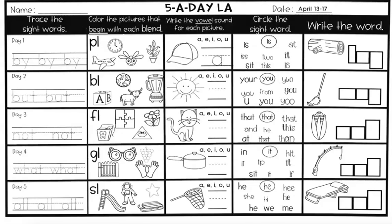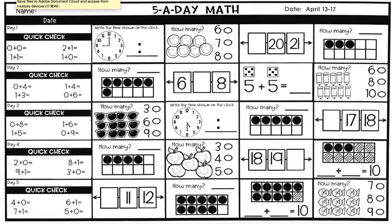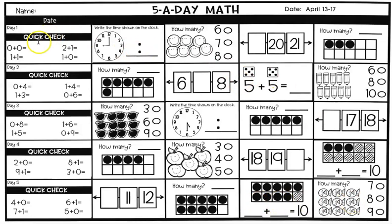That's all for week one on the reading language arts. We're going to move on to the math sheet. For the math sheet for April 13th to 17th, same thing — five-a-day math, you're going to do from left to right each day.